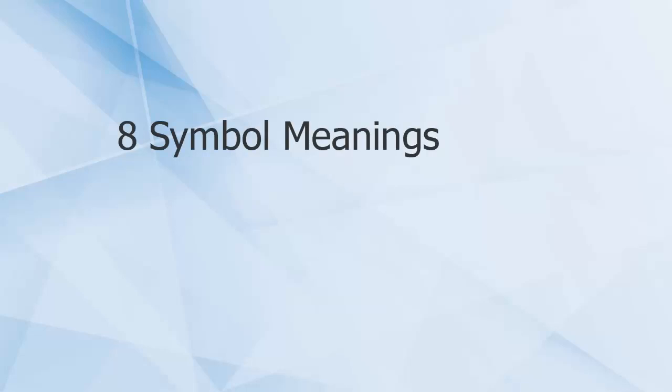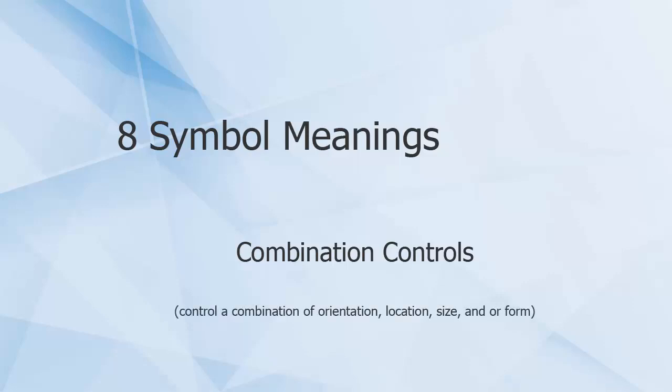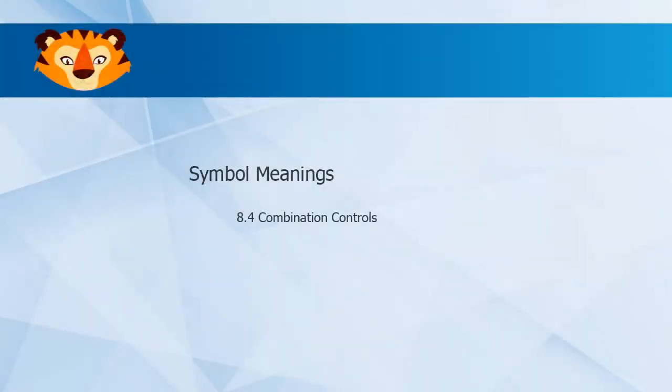Our final category of geometric controls is combination controls. These are symbols which control a combination of orientation, location, size, and or form. Combination controls include runouts and profiles.